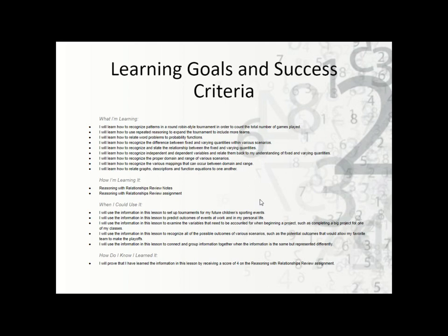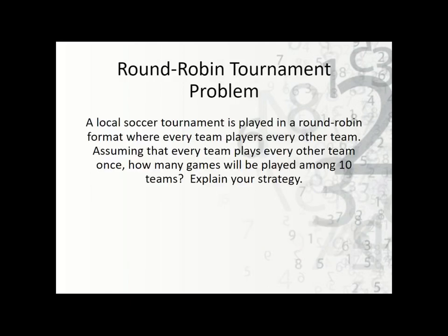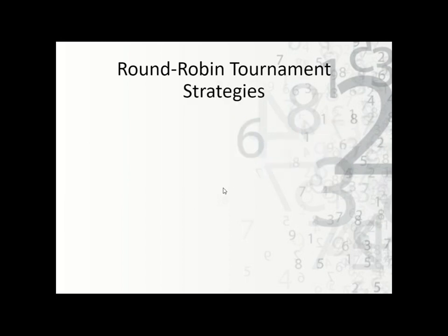The notes begin with the learning goals and success criteria. Here's the scenario: a local soccer tournament is played in a round robin format where every team plays every other team. Assuming that every team plays every other team exactly once, how many games will be played among the 10 teams? Explain your strategy. That's what the question is asking us.